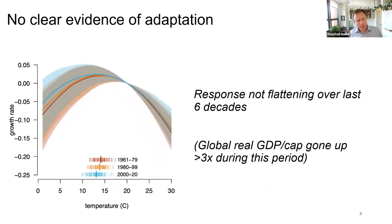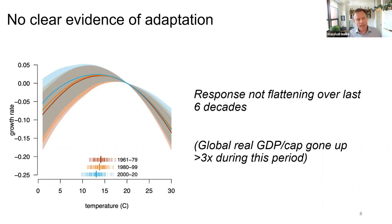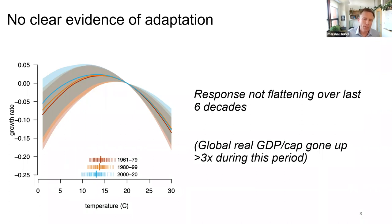One immediate question is adaptation. We're using 60 years of data; the world has gotten three to four times richer. An easy thing we can do is split the data decade by decade and study whether that response function changes over time. We find absolutely no change in the response function — it's rock solid over the last six decades. We see no evidence that adaptation has flattened it out.